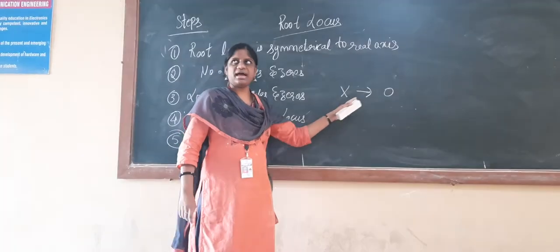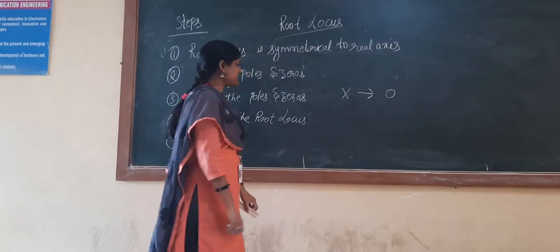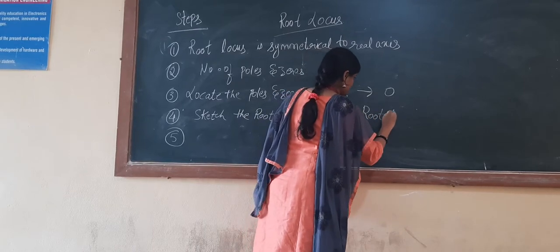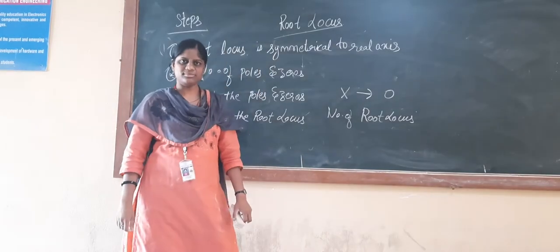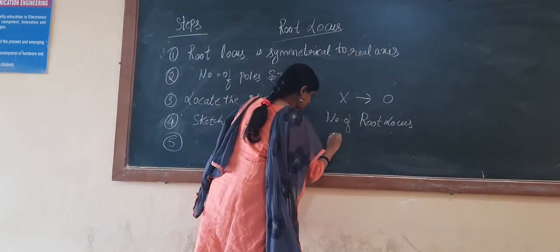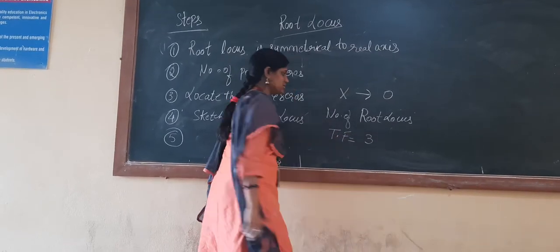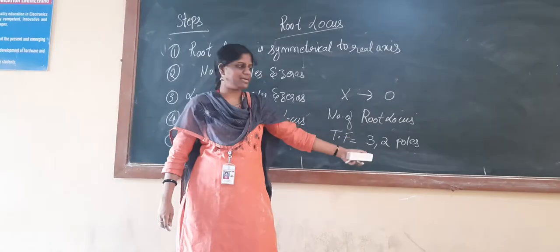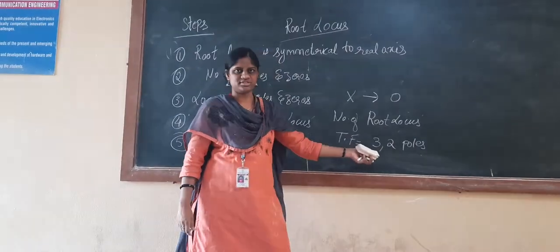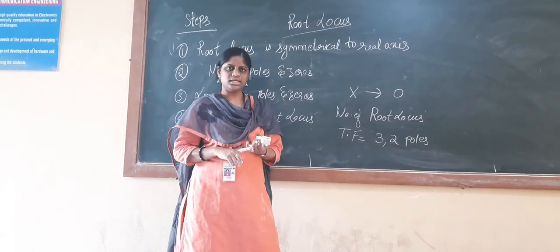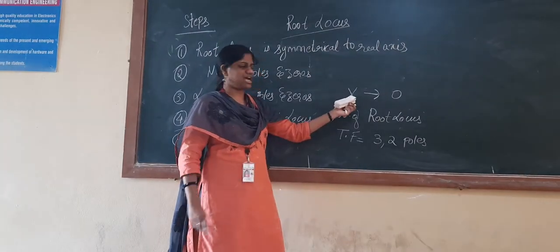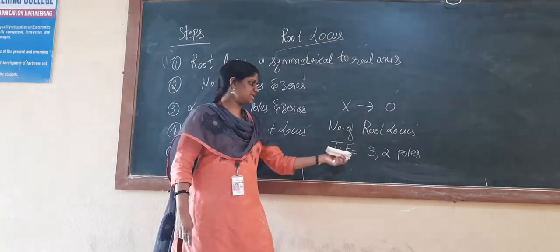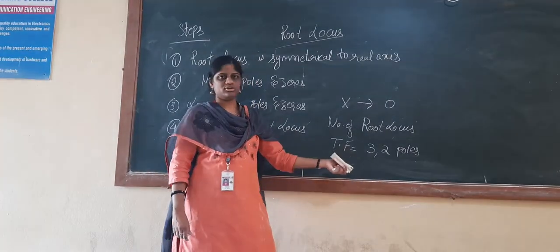You have to start with the pole and end with the zero. The number of root locus paths you need to draw is decided by the number of poles. If your transfer function has three poles, you need to draw three root locus paths; if it has two poles, you draw two paths.